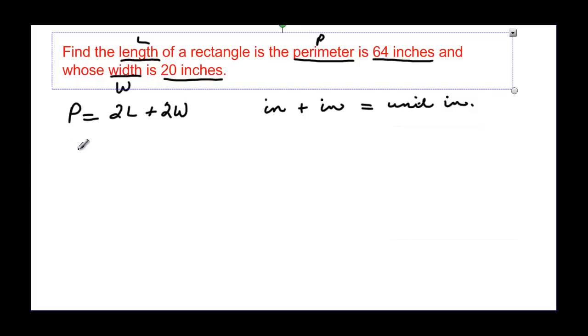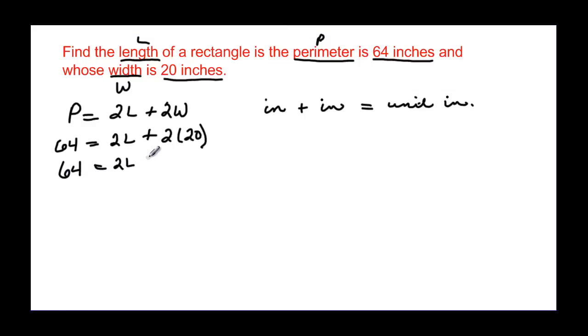So we have P is sixty-four is equal to two times the length. Well length is what we are going to be solving for, plus two times the width which happens to be twenty. So there is our equation and we have one variable. So that is nice. And if we keep going then sixty-four, expanding this out, would be two L plus forty.